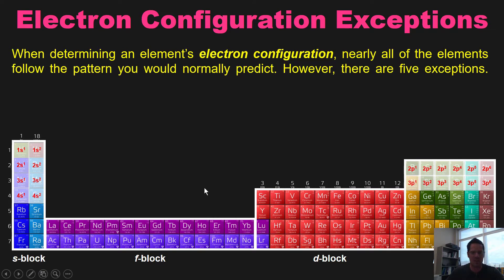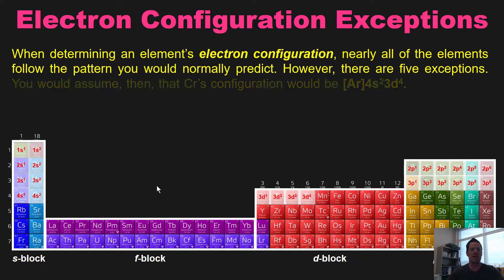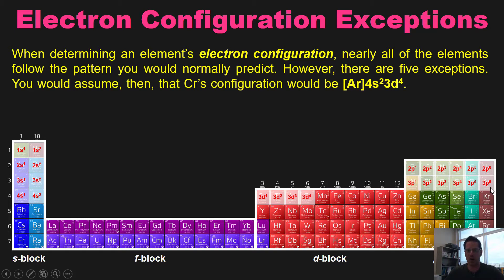Now, as you go from calcium over here to scandium, you're of course going to go down one row to 3d1, just as I talked about in an earlier video. Then you would assume, moving across to chromium, that you'd go 3d1, 2, 3, and 4. Thus, just doing it the straightforward way, you would assume that chromium's electron configuration would be that of argon, which is the noble gas that precedes it, followed by 4s2, 3d4.